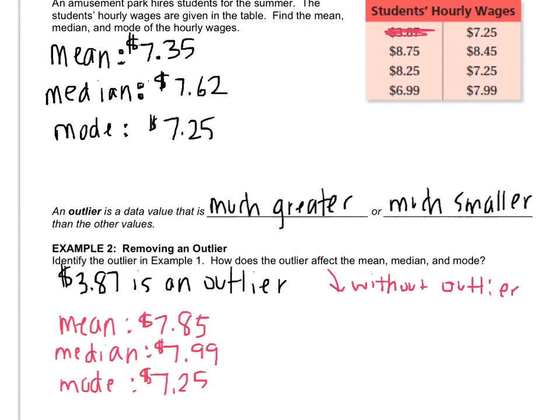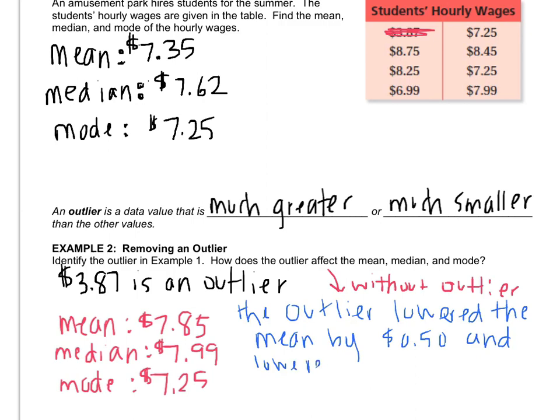Alright, so here are the values without the outlier, and here's what you say in response. The outlier lowered the mean by, it looks like, $0.50, and lowered the median by $0.37. The mode was unchanged.